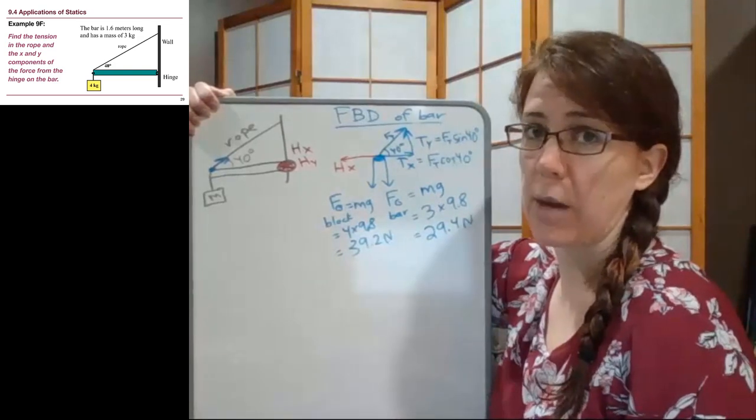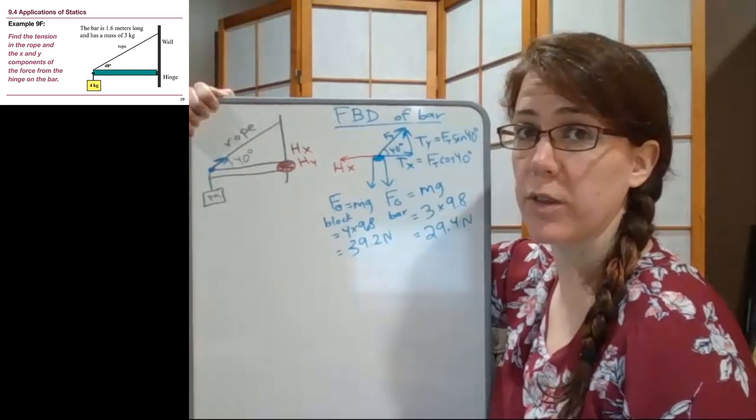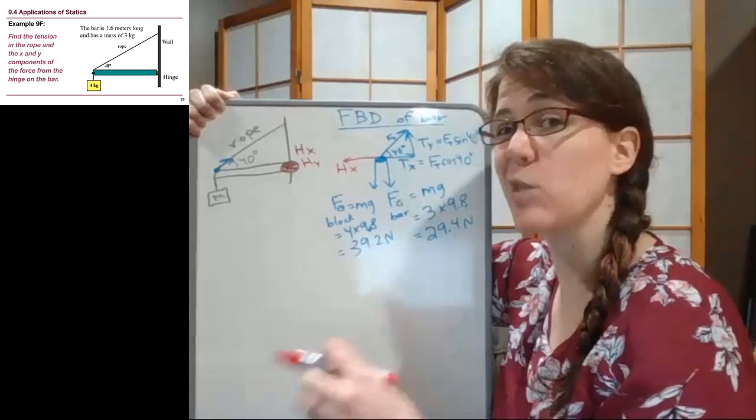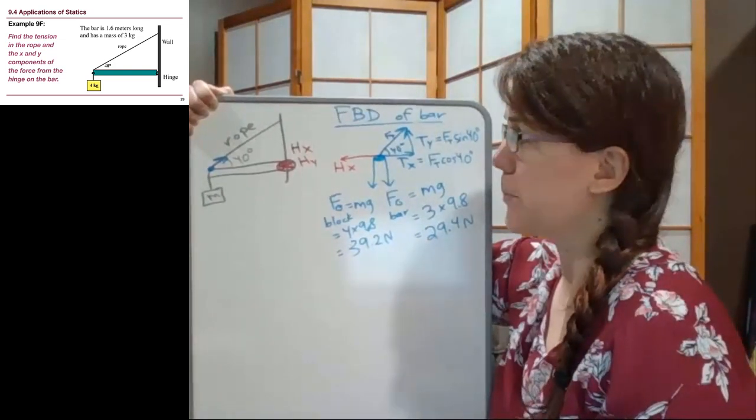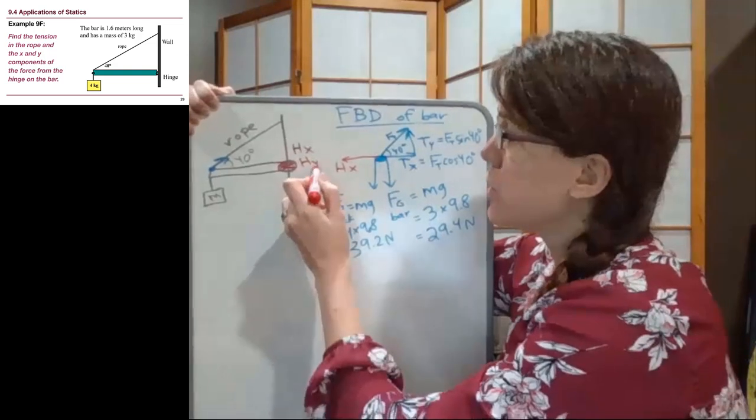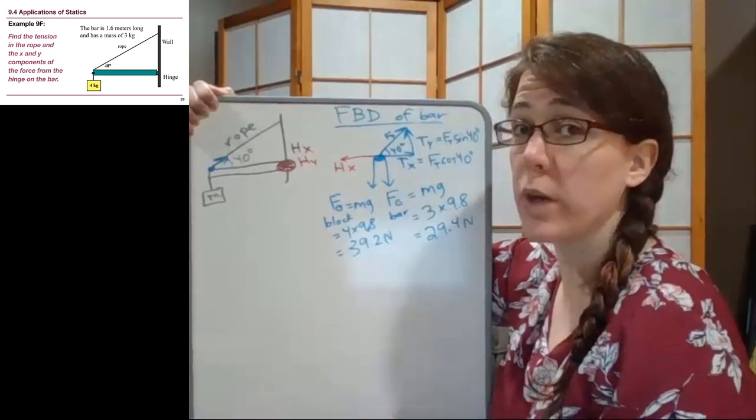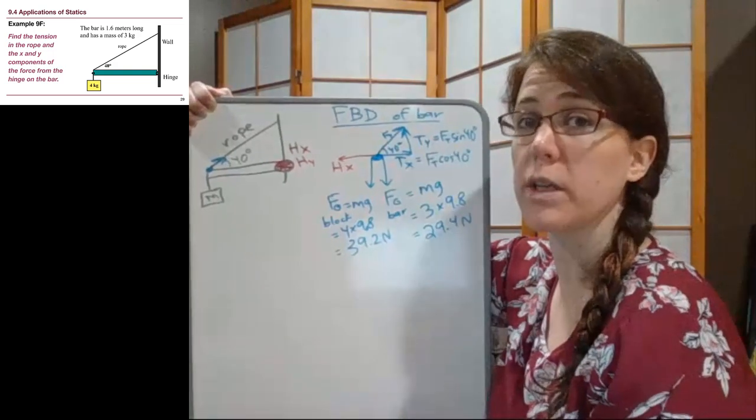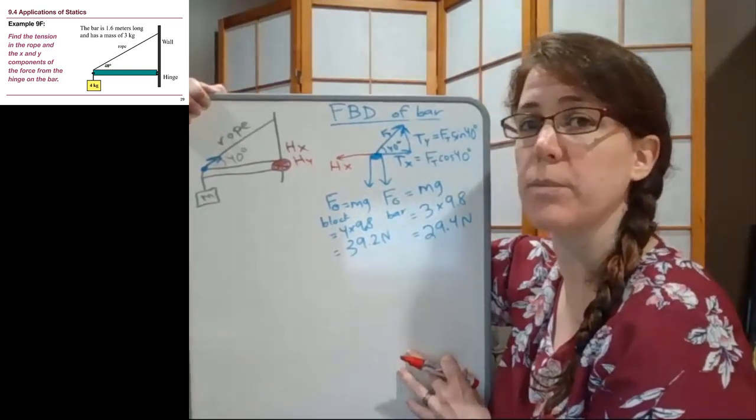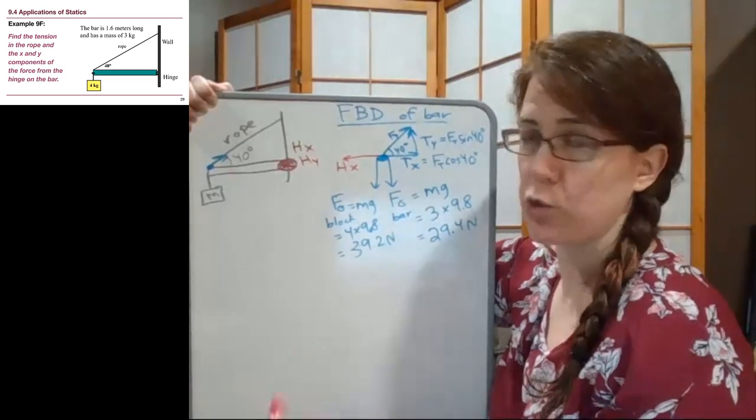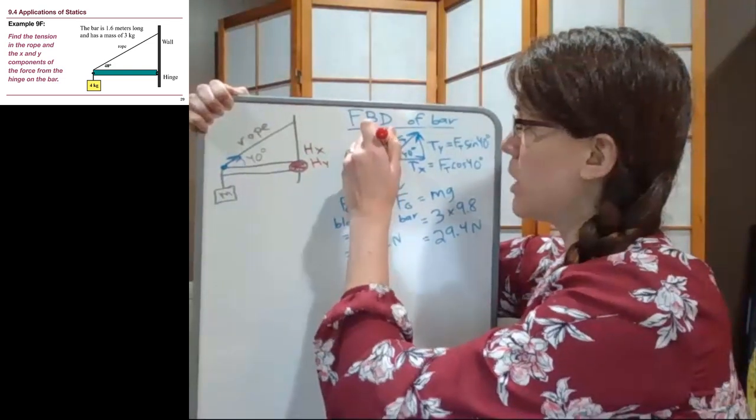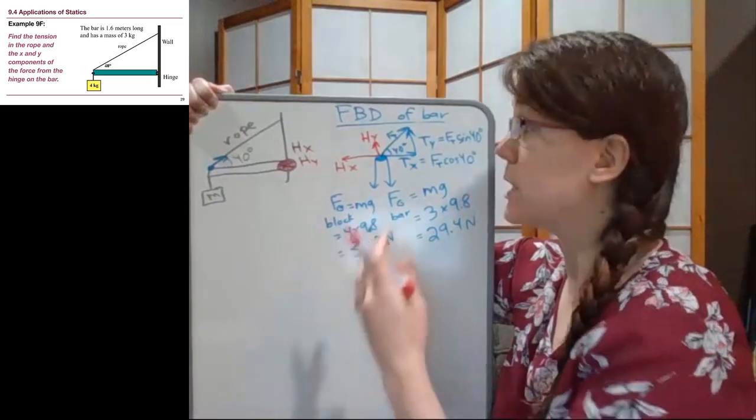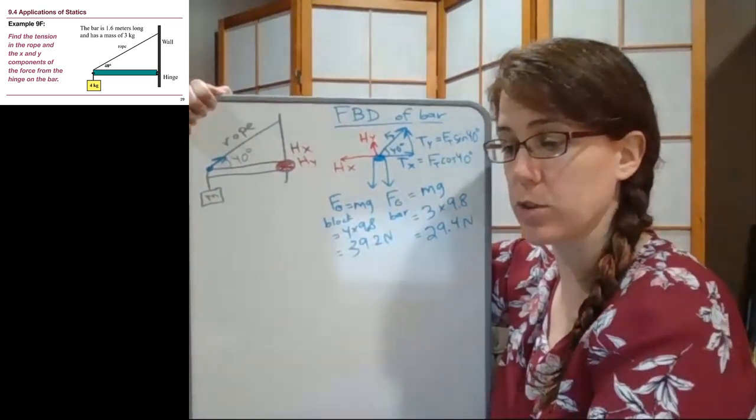If we had the statics lab, one of the parts of the lab is setting up these different examples so that we see in real life what these situations look like. The hinge force in the y direction could go in either the up or the down direction. We just need to choose one and we'll discuss at the end of the problem how we can tell if our choice was correct or not. So I'm just going to draw it up for now without knowing if that's actually the correct direction.